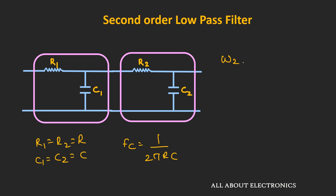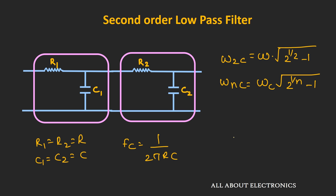The cutoff frequency of the second order filter, ω2c, will equal ω × √(2^(1/2) − 1). More generally, for n cascaded first order filters, the cutoff frequency of the nth order filter will be ωc × √(2^(1/n) − 1). So the cutoff frequency gets shifted by this amount. In the Butterworth filter design, however, the cutoff frequency remains the same regardless of the filter order, which means just cascading first order RC filters alone cannot achieve a Butterworth filter.